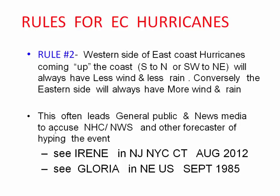Rule number two: the western side of the East Coast hurricane, when it's coming up the coast from south to north or southwest to northeast, will always have less wind and less rain. Conversely, the eastern side will always have more rain and more wind. This leads to the general public and news media accusing the hurricane center and TV meteorologists of hyping the event — because if it's along the coast and you're on the western side, it falls apart. A classic case was Irene in New York City and Connecticut in August 2011, and Gloria in the northeast in 1985, which was supposed to come inland but stayed along the coast from Virginia up through New York City. It was largely a non-event on the western side.